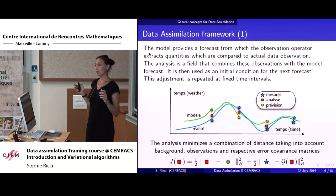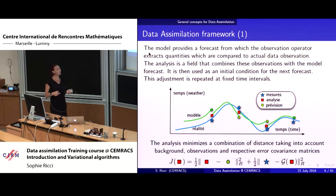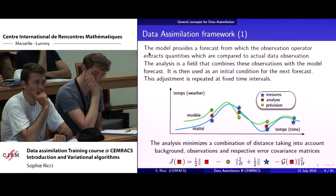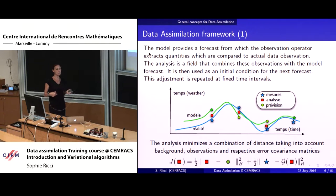Some vocabulary: the word 'analysis' is what we want to obtain. I'll also use the word 'background' — that's the green dot here. The background is basically what the model tells you if you let it run freely. When you use a data assimilation algorithm, you combine the green dot with the blue star, taking into account the errors related to each piece of information, to provide an analysis. You assume that this analysis is a better description of your system, so that you can start from this analysis to run your model forward in time up to the next observation, and with this you're able to provide forecasts in the future.